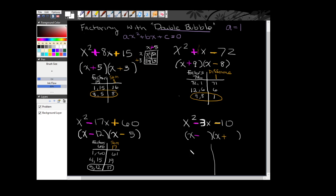Then I create my t table. I know that I need my factors of c on the left hand side, so I need my factors of 10. And then I look at my second sign. My second sign is a subtraction. So I'm looking for a difference, meaning I'm subtracting one from the other, of 3.